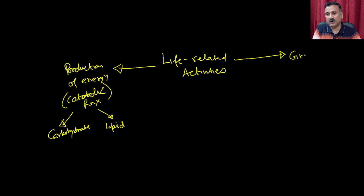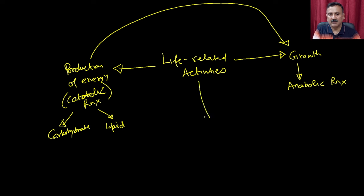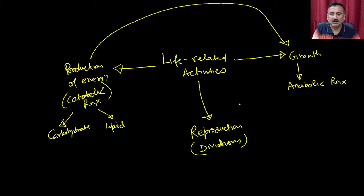The second aspect is growth. As you remember, the energy produced can be used for growth through anabolic reactions. The third aspect is reproduction, where the cell actually performs different types of divisions. That is how a single cell multiplies to become 2 cells, 4 cells, 8 cells, and so on.